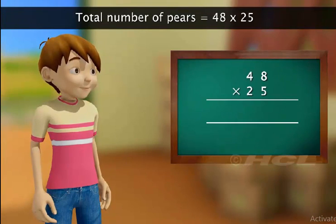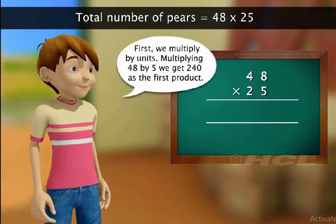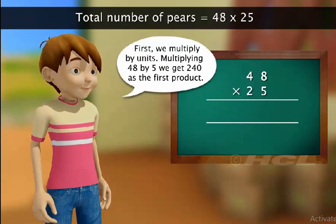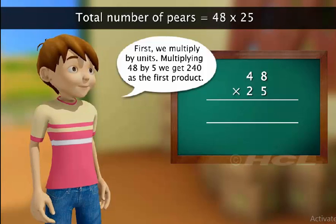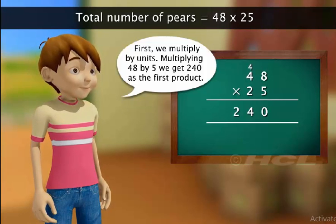The total number of pears is equal to 48 multiplied by 25. First, we multiply 48 by unit's digit of 25. Multiplying 48 by 5, we get 240 as the product. That is correct, Sam.